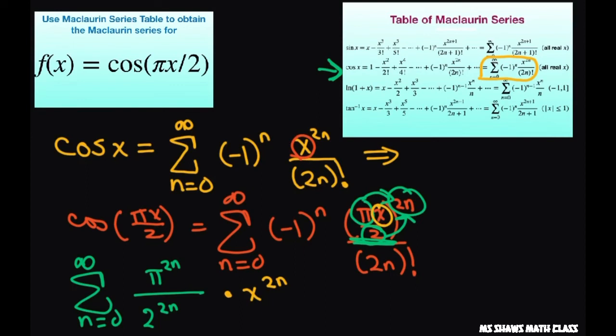Now, in the denominator, we still have 2n factorial. So that's a better way to write it. And since this is all real numbers, your radius of convergence is infinity.